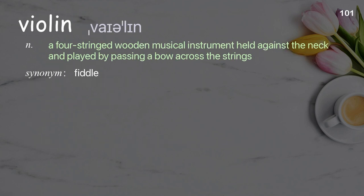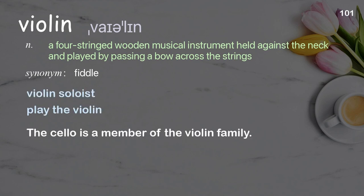Violin: a four-stringed wooden musical instrument held against the neck and played by passing a bow across the strings. Examples: violin soloist, play the violin. The cello is a member of the violin family.